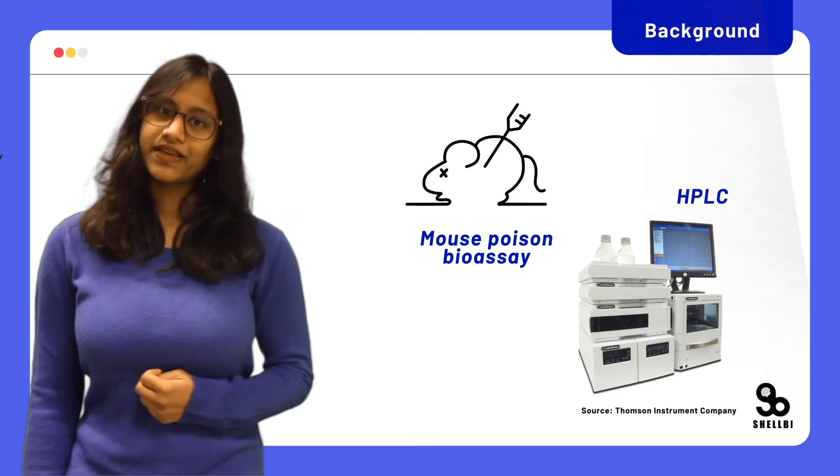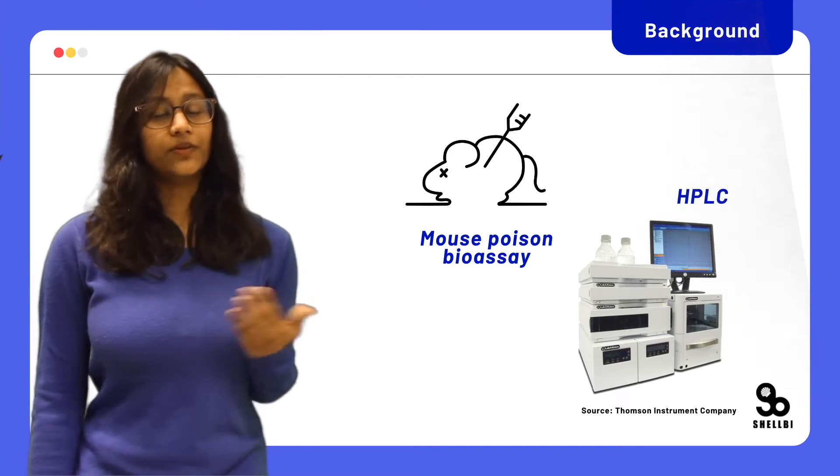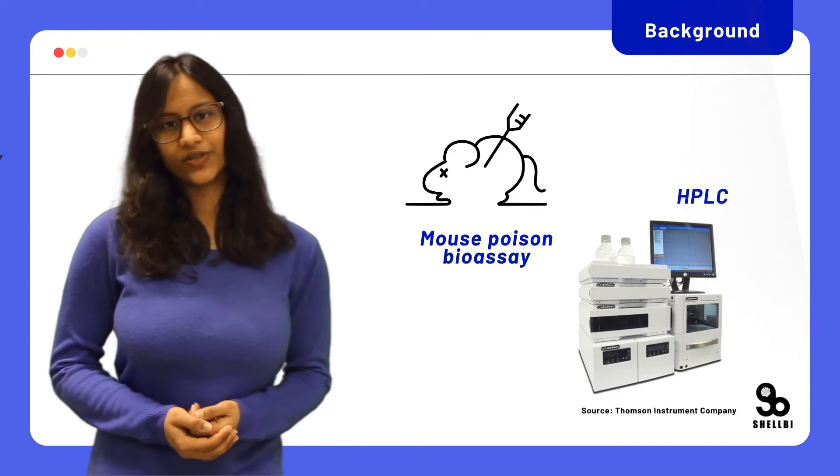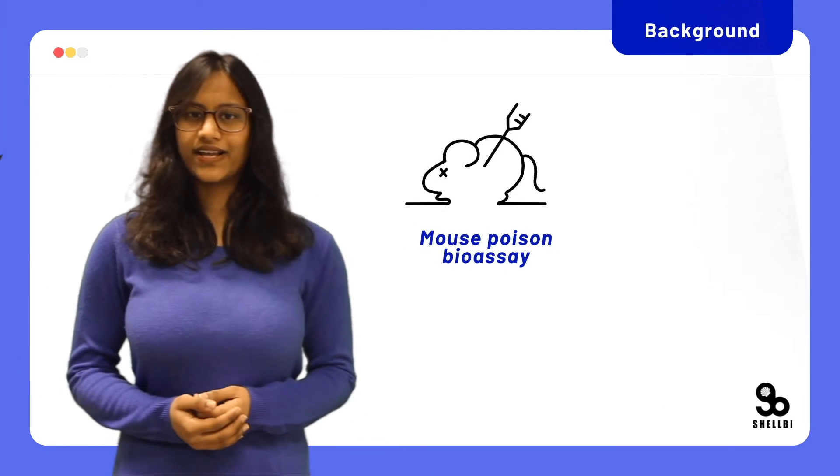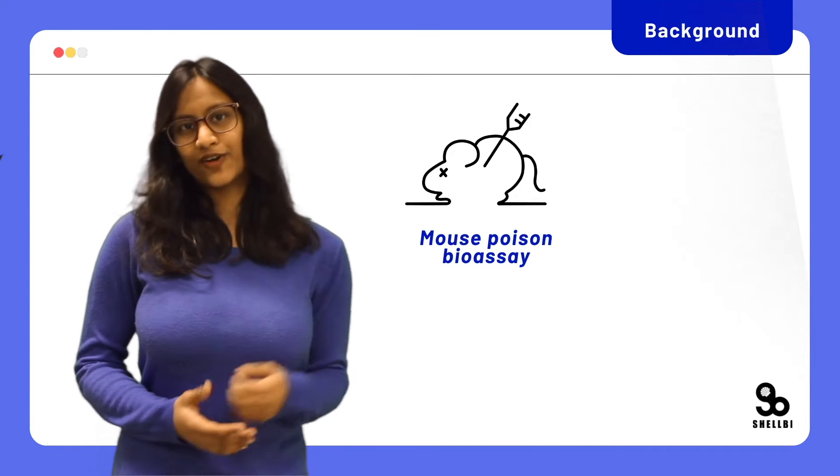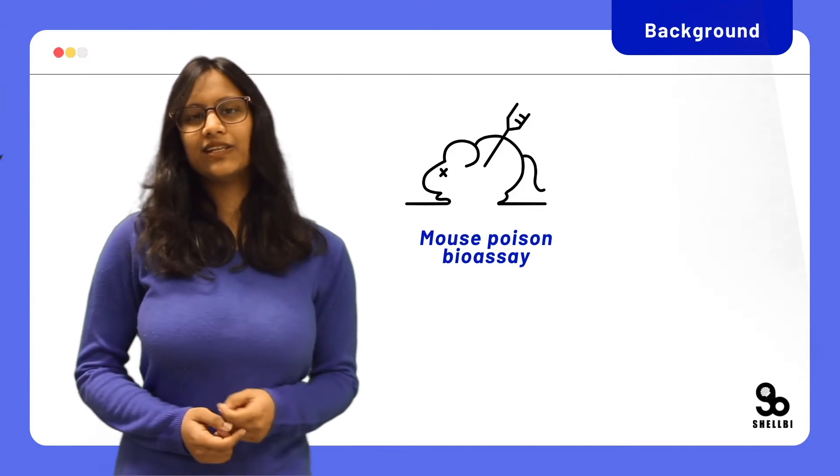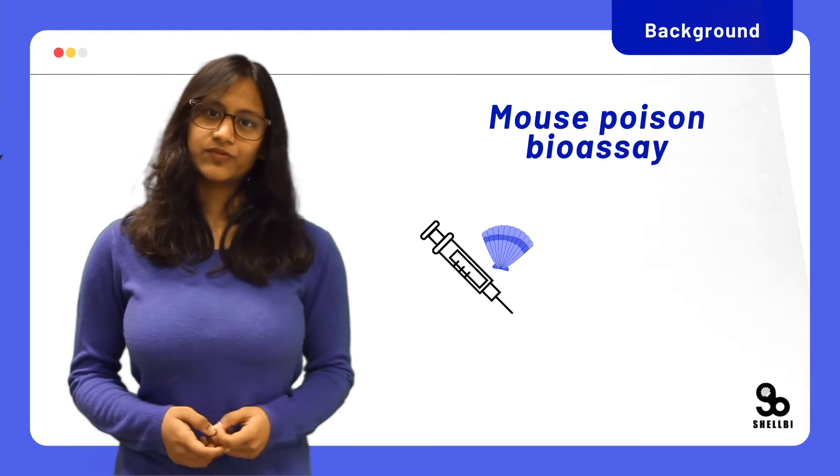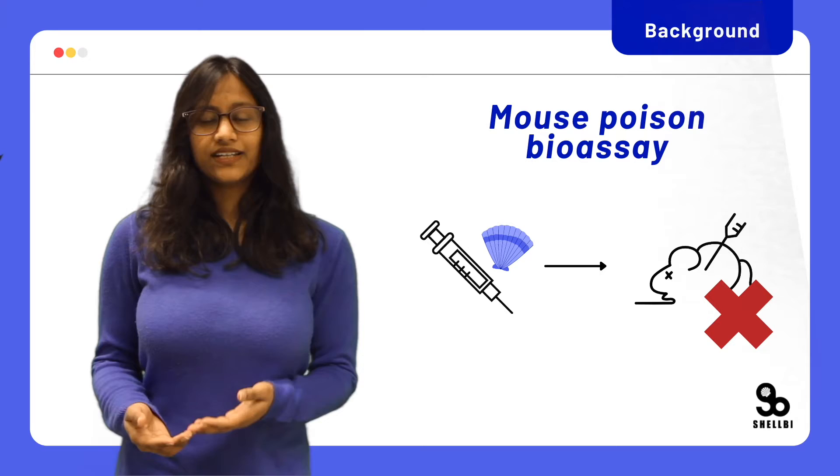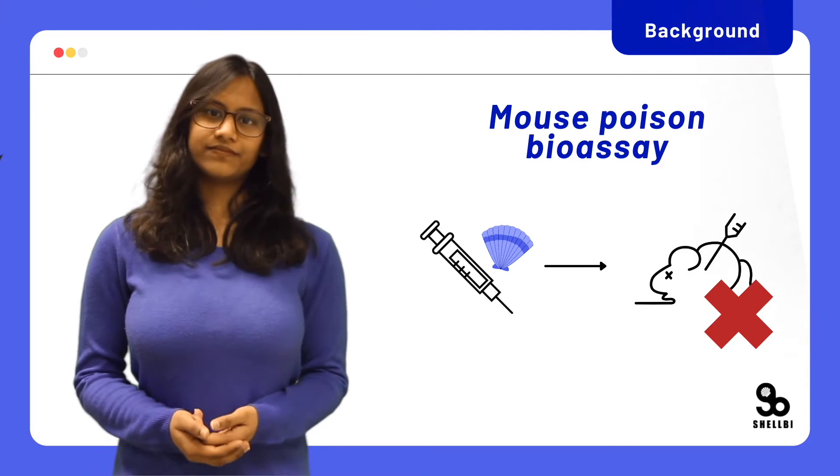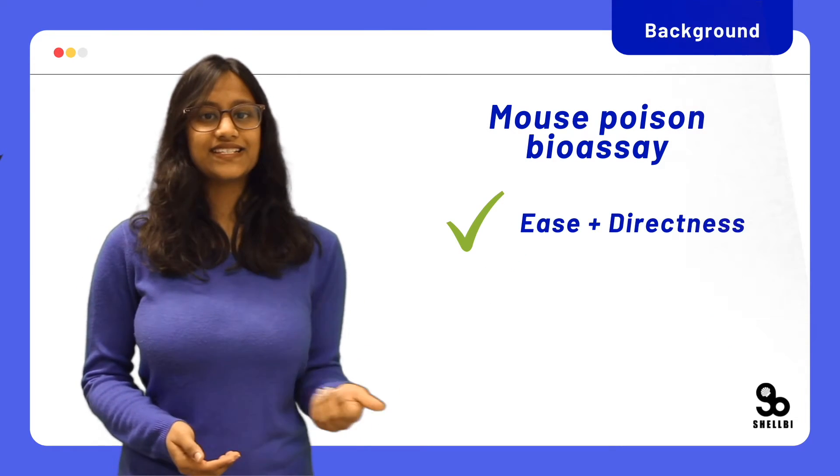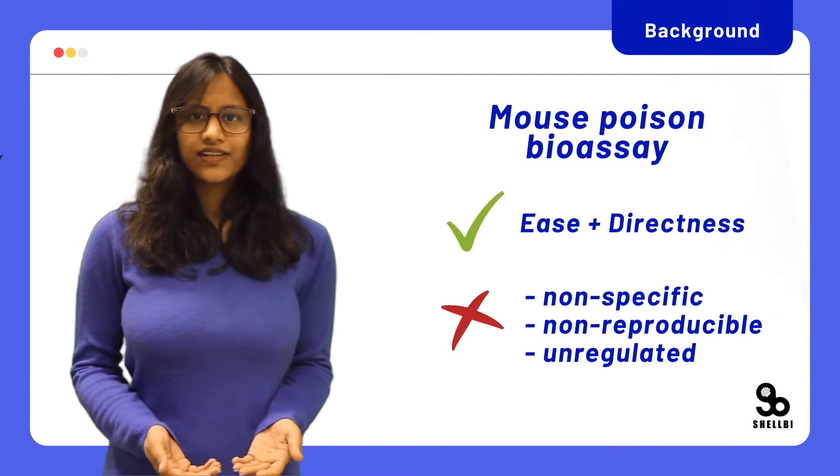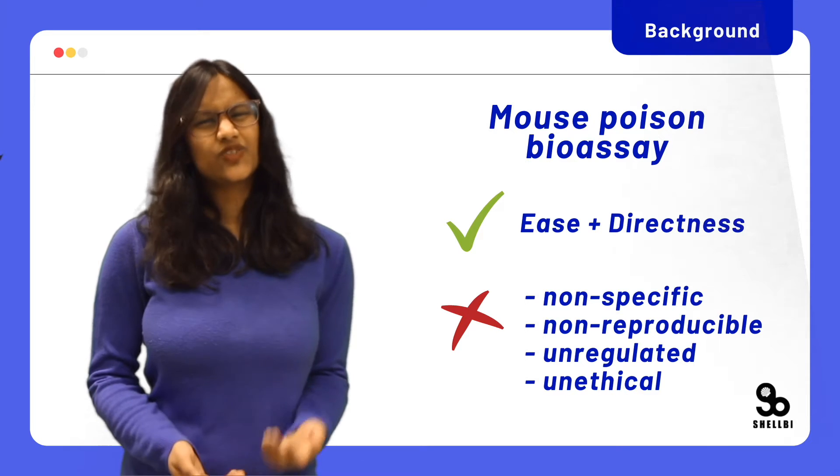The two major accepted methods to test for PSP are the mouse poison bioassay and high-performance liquid chromatography, or HPLC. Mouse poison bioassay, earlier accepted as the gold standard for toxin testing, can still be seen in low-budget detection centers. In this method, mice are injected with shellfish samples, and if the majority die, the whole stock of shellfish is rejected. Despite the relative ease and directness of this assay, it is non-specific, non-reproducible, unregulated, and needless to say, extremely unethical.